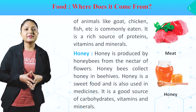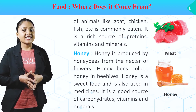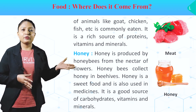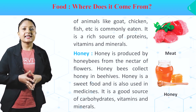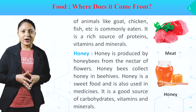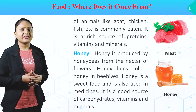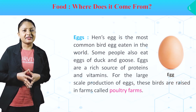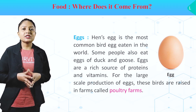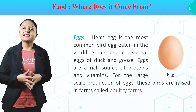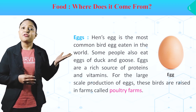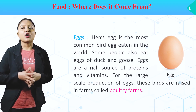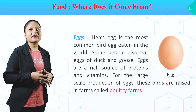Honey. Honey is produced by honeybees from the nectar of flowers. Honeybees collect honey in beehives. Honey is a sweet food and is also used in medicines. It is a good source of carbohydrates, vitamins and minerals. Eggs. Hen's egg is the most common bird egg eaten in the world. Some people also eat eggs of duck and goose. Eggs are a rich source of proteins and vitamins. For large scale production of eggs, these birds are raised in farms called poultry farms.